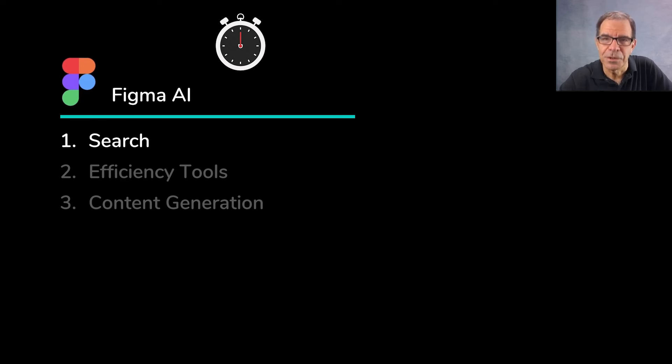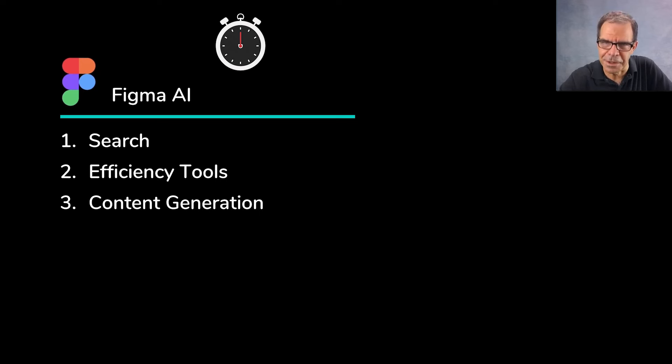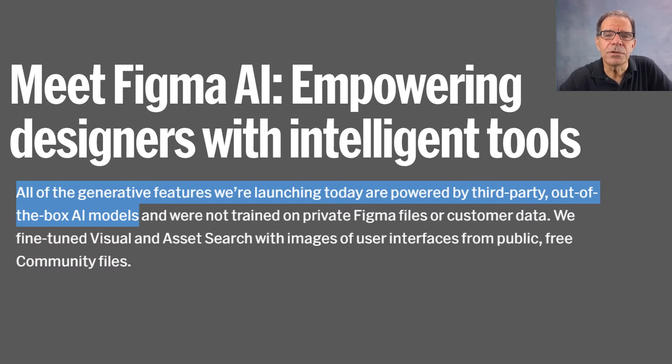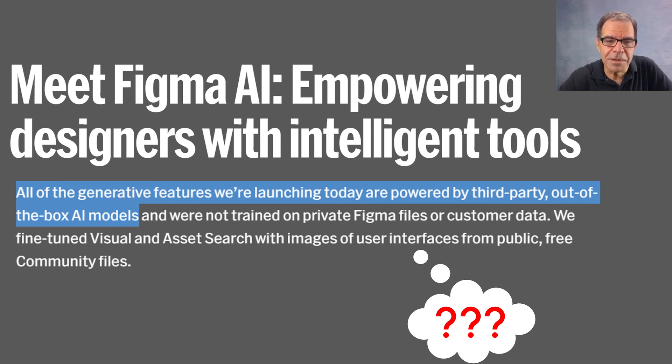Now, how was this done? The announcement says: all of the generative features we're launching today are powered by third-party, out-of-the-box AI models. Which ones? It doesn't say. But CNBC asked about that, so we know from an interview with CEO Dylan Field that the features mentioned were in fact powered by OpenAI language models and by the Amazon Titan diffusion model.